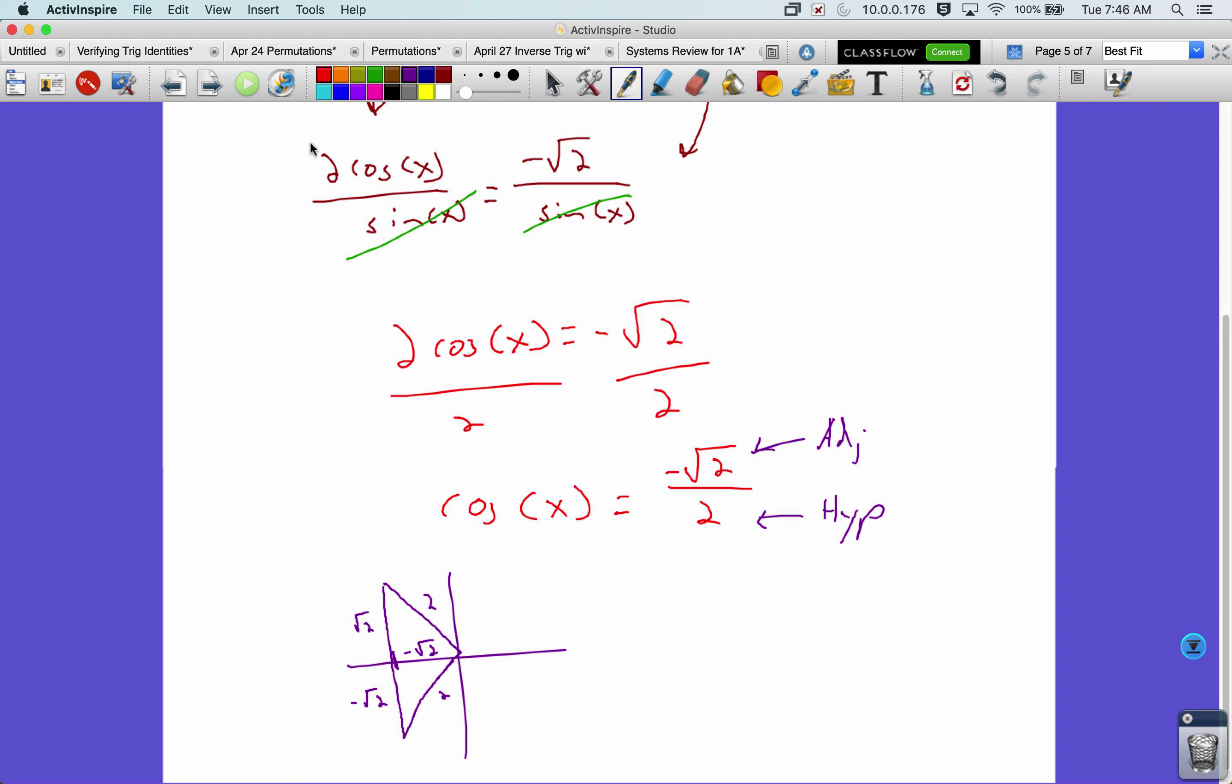And then this side length over here has to be then root 2 and negative root 2. We recognize that as our 45 degree triangle, or pi over 4, meaning this is 3 pi over 4 to get to there. And that right there is 5 pi over 4. All right, now we've got to be careful while we write our answer. x equals 3 pi over 4 plus 2 pi n, or 5 pi over 4 plus 2 pi n.